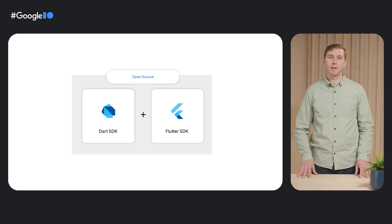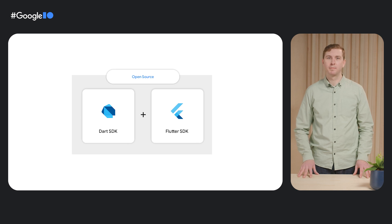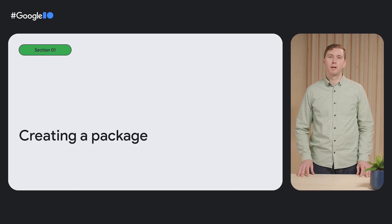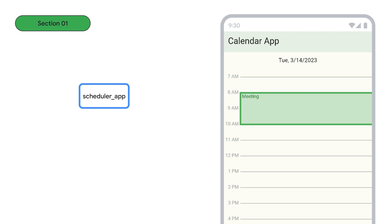When developers work together, everyone gets a higher return on their investment. That's why the Dart and Flutter SDKs have been open source from the very beginning. Let's start by creating a package. I'm starting with a Flutter app that takes a list of tasks and schedules them on my calendar. Instead of publishing my entire app, I'd like to just publish the constraint-solving algorithm as a standalone package.